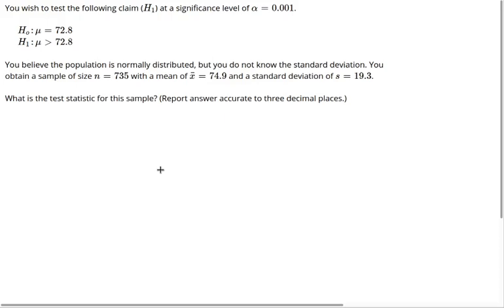You wish to test the following claim, which is H1 at a significance level of alpha equals 0.001. The claim is that the mean in this situation is greater than 72.8.